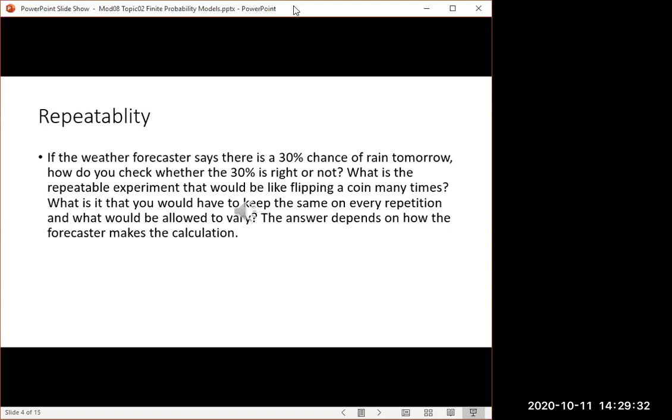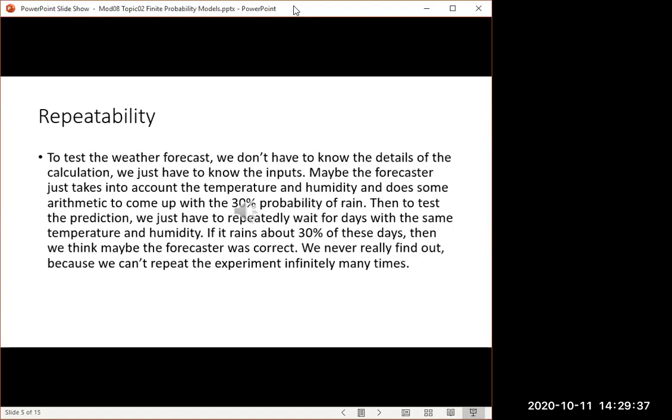The answer depends on how the forecaster makes the calculation. To test whether the weatherman was right about the 30%, we don't have to know the details of the calculation. We just have to know what the forecaster is taking into account. Maybe the whole forecast is just based on the temperature and humidity and nothing else. If that was the case, then to test the prediction, you just repeatedly wait around for a day that has the same temperature and humidity like today, and you see if it rains the next day.